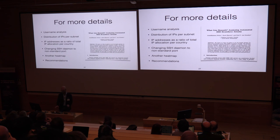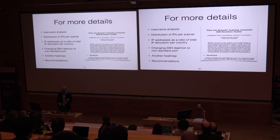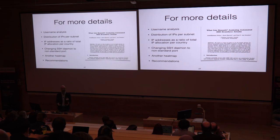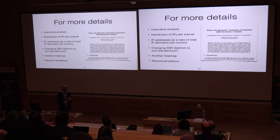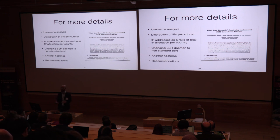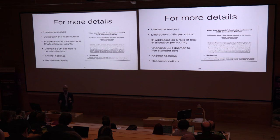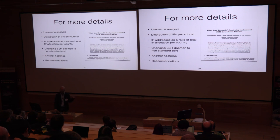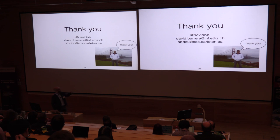I'm out of time, but I encourage you to look at the paper if anything seemed interesting. There's much more analysis: username analysis, distribution of IPs within subnets, IP addresses as a ratio of total IP allocation per country to find the most malicious countries, consequences of changing your SSH daemon to a non-default port, another heat map, and recommendations for system administrators that go beyond just saying turn on public key authentication. I'll take some questions now — thank you for your time.